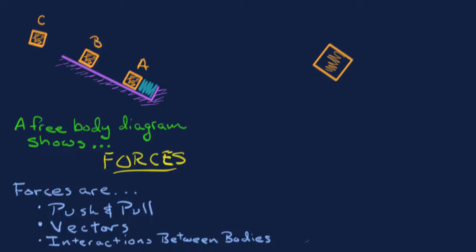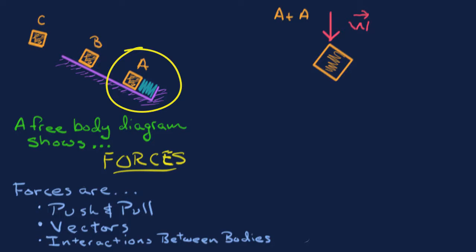Let's draw the free body diagram at point A. First, we have gravity pulling downward. In a free body diagram, vectors are arrows that point in the direction the force acts. I'll call this the weight force and label it W with an arrow above it to indicate it's a vector, not a scalar.